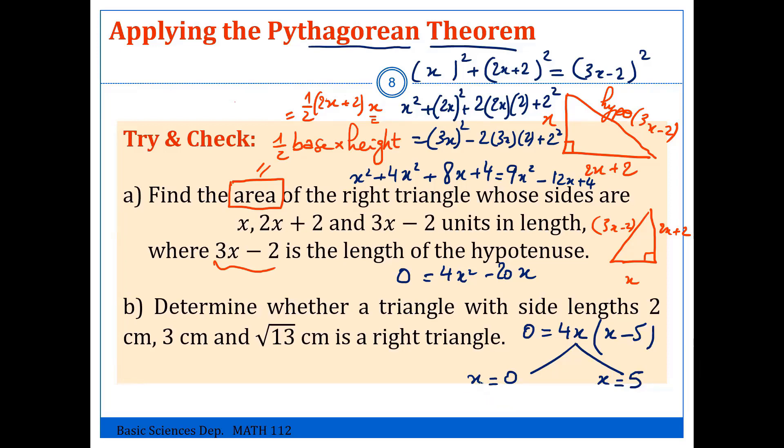we can by the other options here. When we replace x equals 0 in these expressions, here we get negative 2 for this length. This is zero, so this cannot be possible. So we eliminate this option because length must be positive.